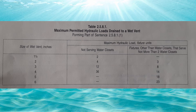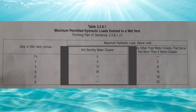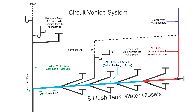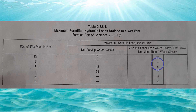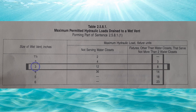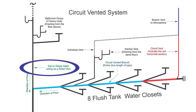Let's look at table 2581. We need to ask ourselves: are we serving water closets in the circuit-vented branch? If yes, use the rightmost column. If there are no water closets in the system, use the middle column. In this example, I have six fixture units draining down. Looking in the rightmost column, it goes from three to eight — if I go across to the left on eight, it says you need a minimum three-inch pipe, which we need anyway because we have a water closet draining through. That means we have sized our soil/waste stack acting as a relief vent properly: three inches.